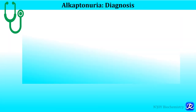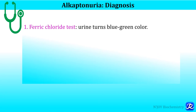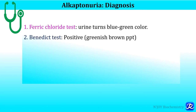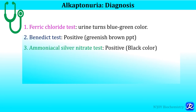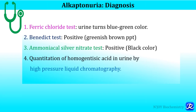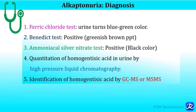How is alkaptonuria diagnosed? Various tests can be done. First, the ferric chloride test: ferric chloride solution is added to urine, and urine turns blue-green — this test is positive in alkaptonuria. Second, the Benedict test is also positive, giving a greenish-brown precipitate. Third, the ammoniacal silver nitrate test is positive, giving a black color. Quantitative estimation of homogentisic acid in urine can be done by HPLC, and identification can also be done by gas chromatography, mass spectrometry, or tandem mass spectrometry.